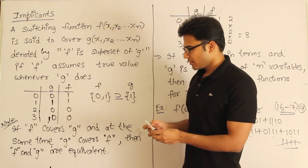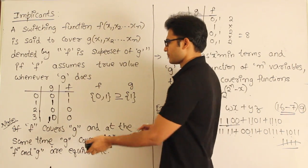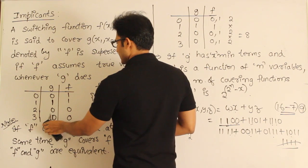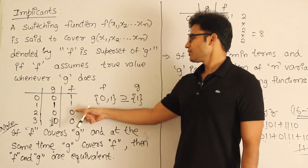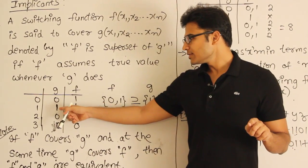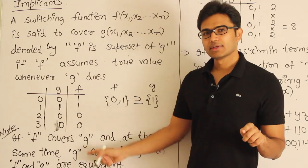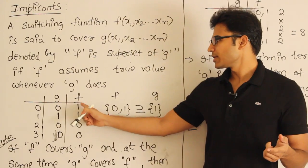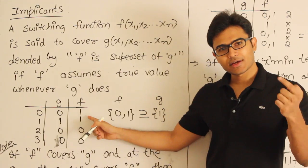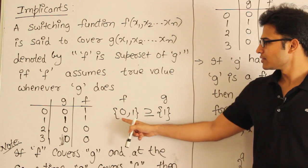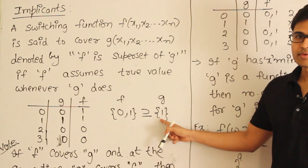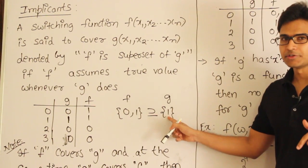Now if you look at f, f is having 1, 1 here and 0, 0 here. So whenever g is 1, f is 1. So you can say that f is actually covering g, which means inside f, all the minterms that are present in g are already present. f contains the minterms 0 and 1, and g contains only minterm 1 — whatever minterms are present in g are already present in f.